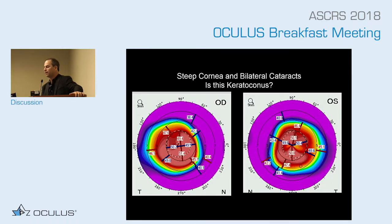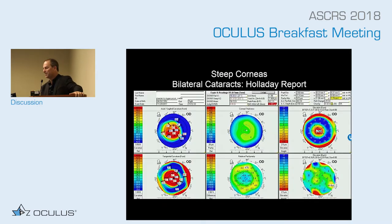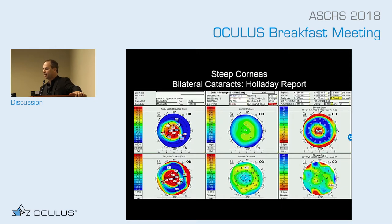This next case is a patient with a very steep cornea and bilateral cataracts — a Pentacam case. First question: do you think this is keratoconus or something else? The color map is going up to crazy purple, which is why standardized colors from blue to red are important. So let's go to the more accurate color map. This patient had previous hyperopic LASIK, and I'm going to show you the difference between this and keratoconus — this map really shows it very nicely.